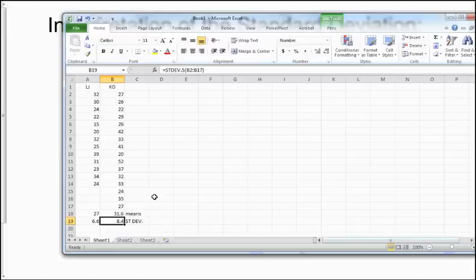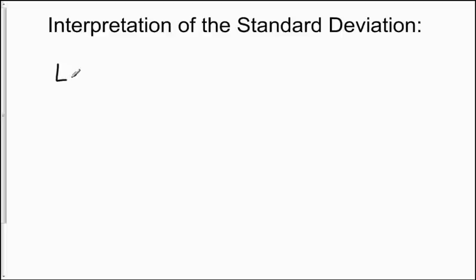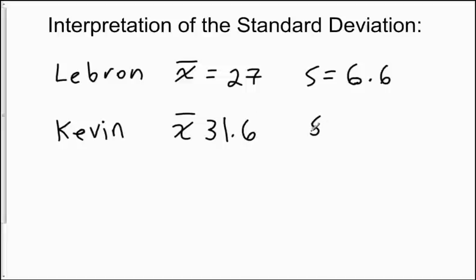Another way to use the standard deviation is to talk about how many standard deviations a value is away from its mean, and to visualize this on a number line. For LeBron we have X-bar = 27 and S = 6.6, and for Kevin Durant we have X-bar = 31.6 and S = 8.4.